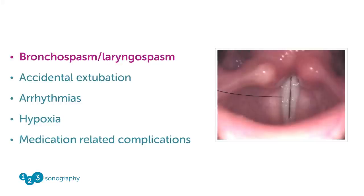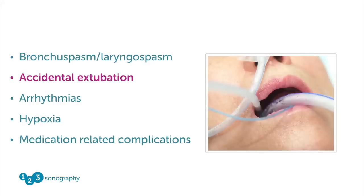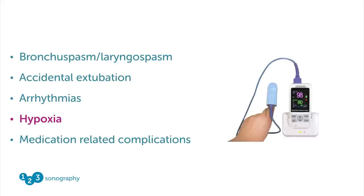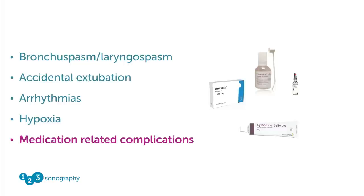Other complications include bronchospasm and laryngospasm — some patients are very sensitive, and this could also be a reaction to the lidocaine spray. Accidental extubation can occur if you pull on the endotracheal tube instead of the TEE probe. Arrhythmias and bradycardia may occur due to a vagal reflex, potentially causing an AV block. Hypoxia is a concern especially in patients who are already hypoxic, such as those with right heart problems or poor left ventricular function. Finally, there are medication-related complications from sedation.